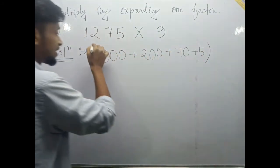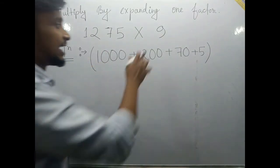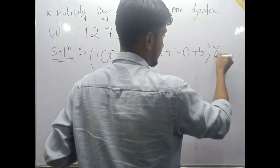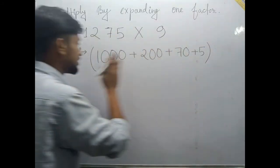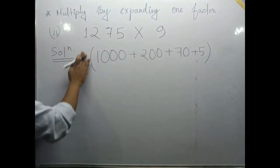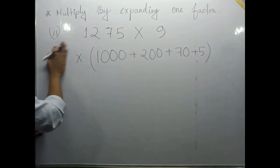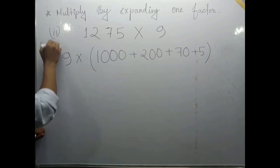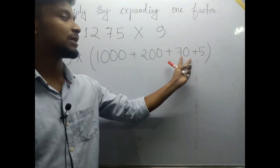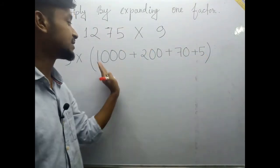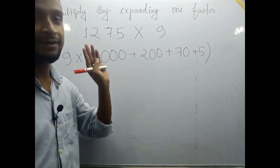1275 can be written as 1000 plus 200 plus 70 plus 5. This is the expansion. And multiplied by 9, it doesn't matter which side you write it. 9 multiplied by 1000 plus 200 plus 70 plus 5. This is the expansion of 1275.